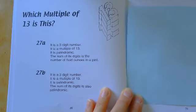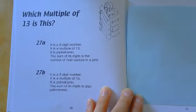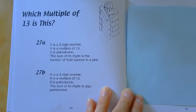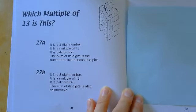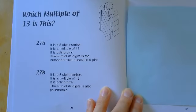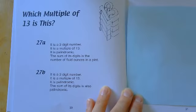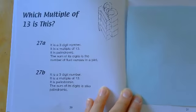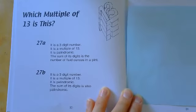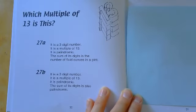Let's have a look at the question. Question 27a: what multiple of 13 are we talking about? It's a three-digit number, it's a multiple of 13, and it's palindromic. Remember that means it's the same forwards and backwards. And the sum of its digits is the number of fluid ounces in a pint. So that's the fact that you might not know. You might need to ask somebody, ring your grandparents, ask them. You want the number of fluid ounces in a pint.